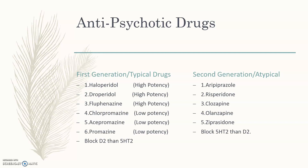First generation antipsychotics — examples include haloperidol, droperidol, fluphenazine, chlorpromazine, acepromazine, and promazine. They block D2 receptors more than 5-HT2 receptors. In second generation, the atypical antipsychotics, the 5-HT2 blocking action is greater than D2 blocking action.